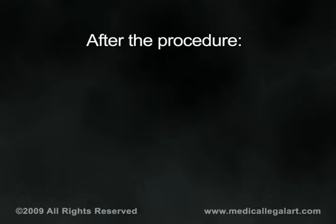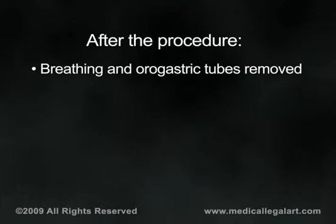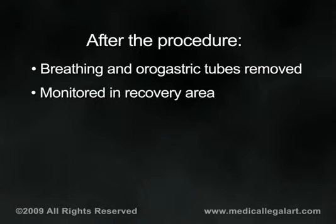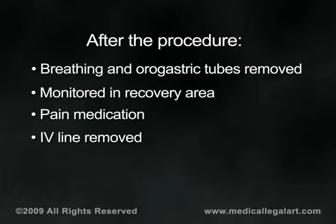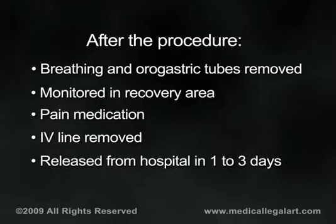After the surgery, your breathing and orogastric tubes will be removed and you will be taken to the recovery area for monitoring. You will be given pain medication as needed and will progress slowly from a liquid to a soft to a solid diet. Your intravenous lines will be removed once your gastrointestinal system recovers. Most elective cholecystectomy patients can leave the hospital within 24 hours.